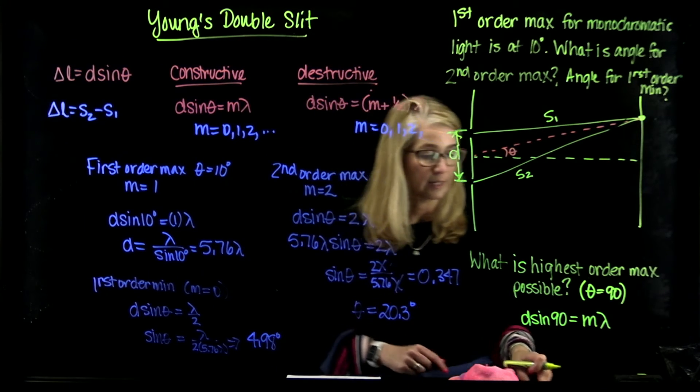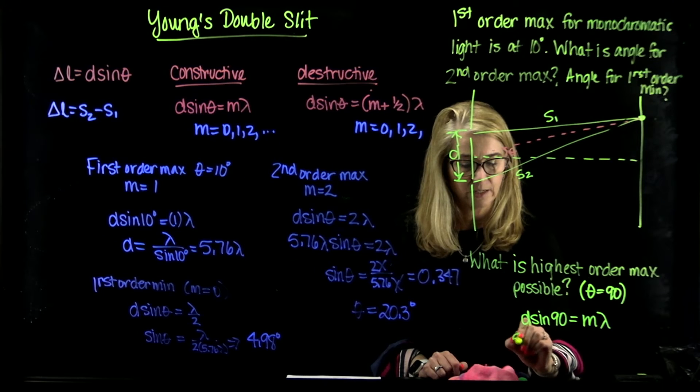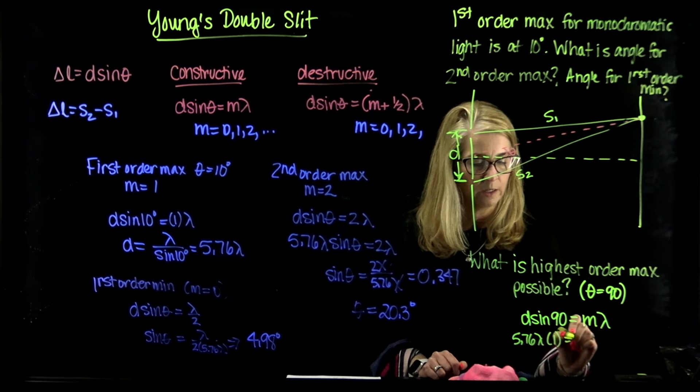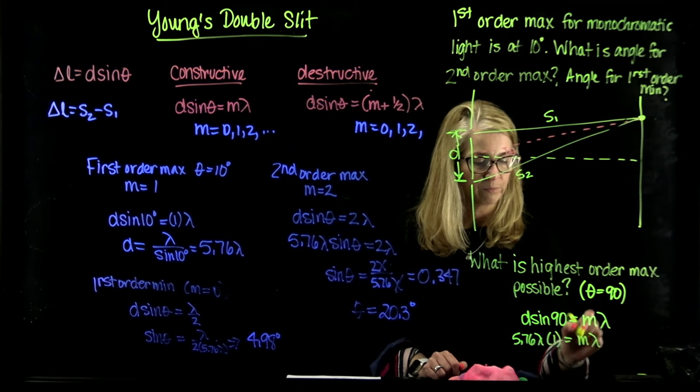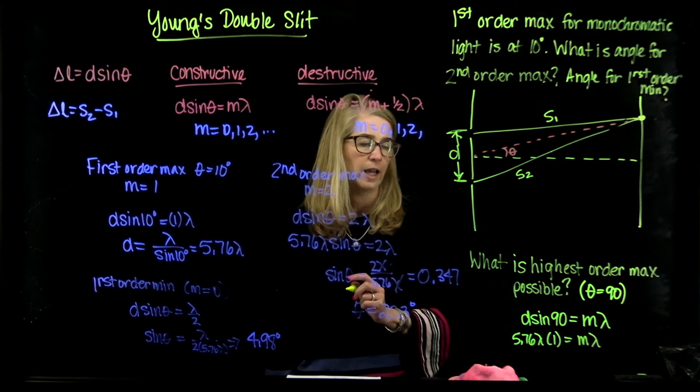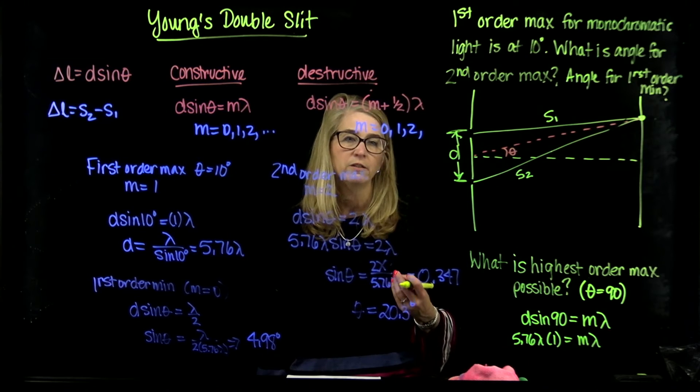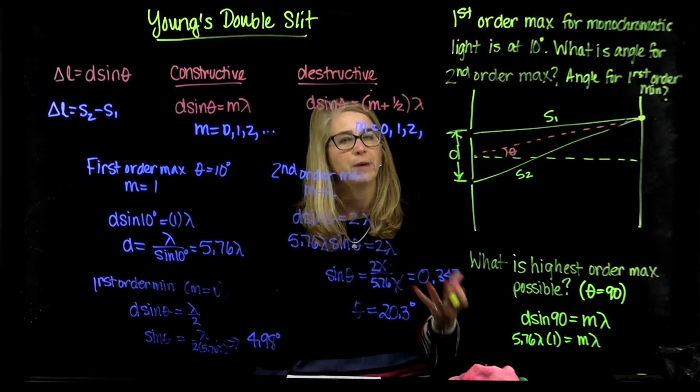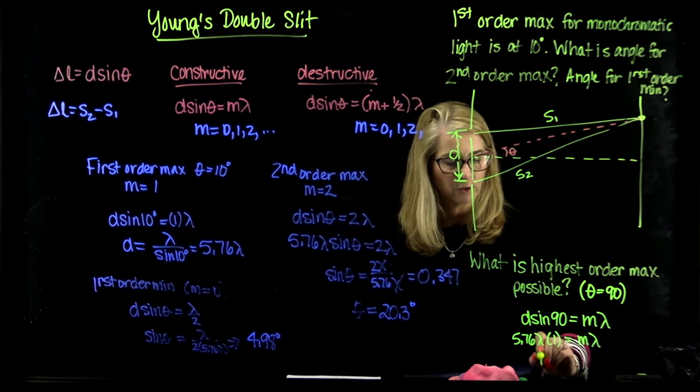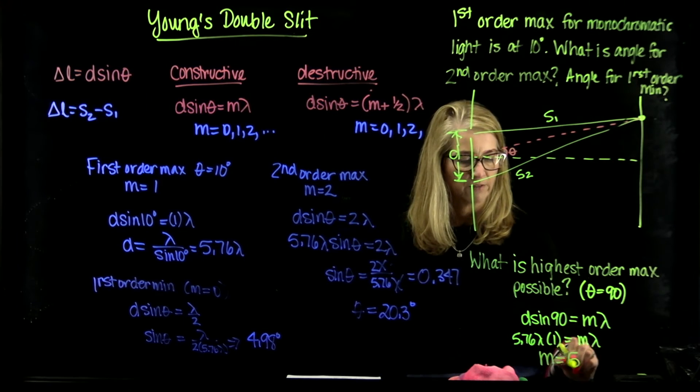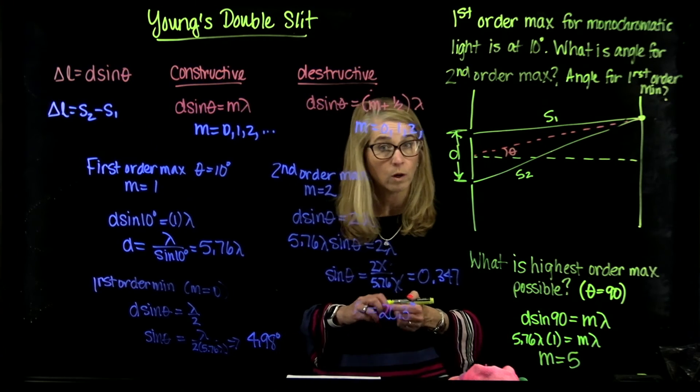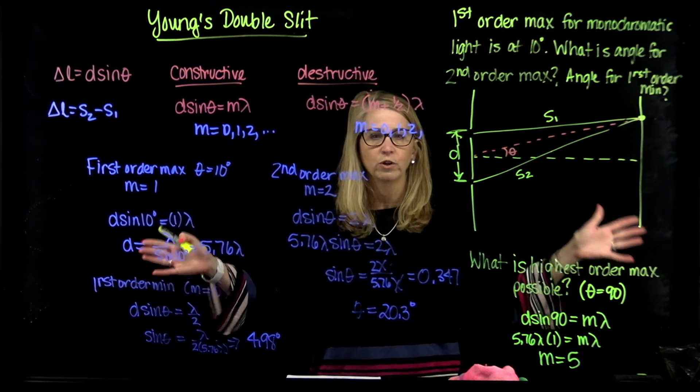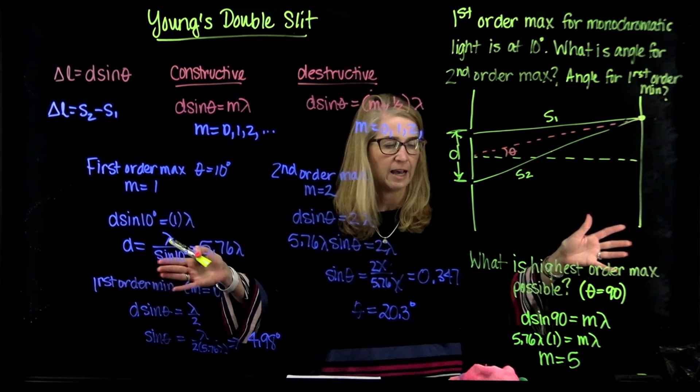So I have D is 5.76 lambda times the sine of 90, which is just 1, is equal to M lambda. So you can see that here, M corresponding to 5.76 is really what we found. Now M has to be an integer. And so because of that, we have to choose the next integer that's lower than 5.76. And so the highest order max that we could actually have would be 5.